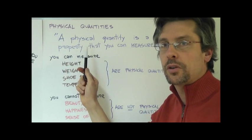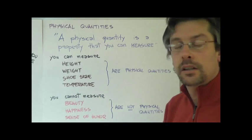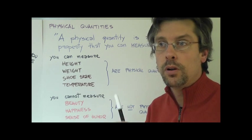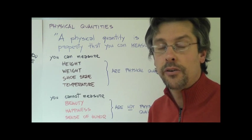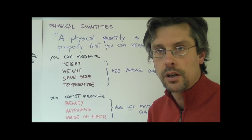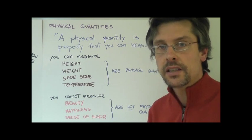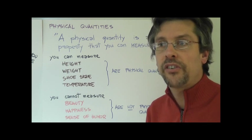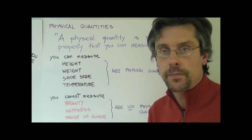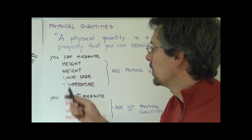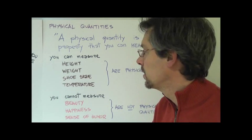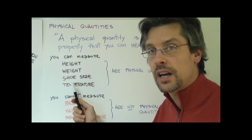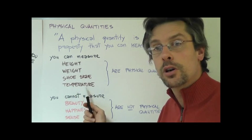We're going to deal with physical quantities and as for a definition, a physical quantity is a property of people, of substances, of things that you can measure. As we like to say, physics is a science of measurement. So we're going to stick to deal with things that you can measure. Now let's get back to you. We can measure your height, your weight, your shoe size, and your body temperature.